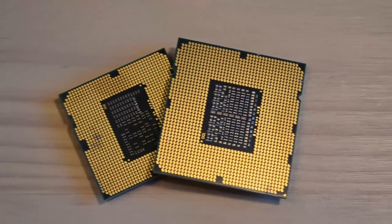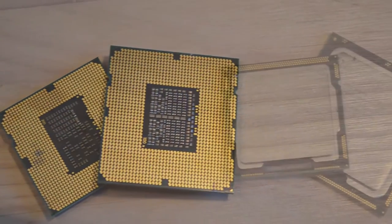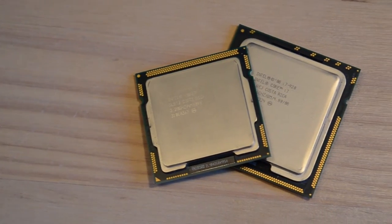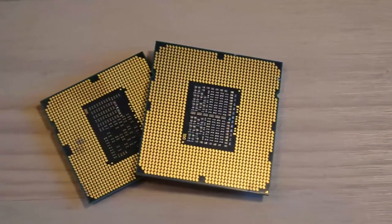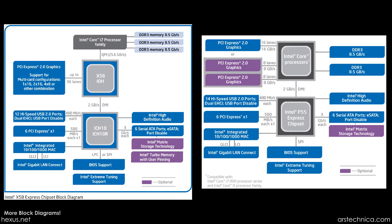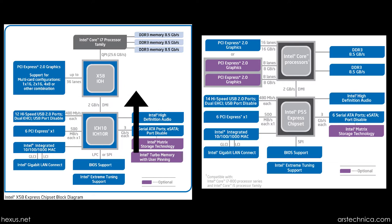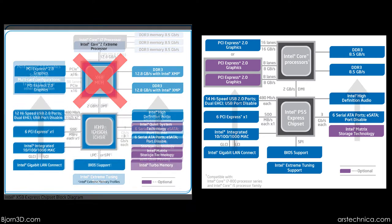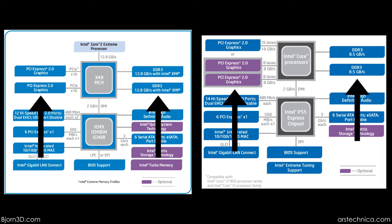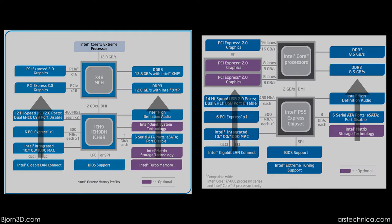With LGA1156 for the mainstream, we see a slightly toned-down version of Nehalem — a physically smaller socket with fewer pins and one less memory channel. With LGA1156, Intel moved the PCI Express controller from the Northbridge to the CPU die. This made the QPI obsolete, because there was no Northbridge for it to communicate with any longer, and all of the Northbridge's functions had now been integrated into the CPU die.